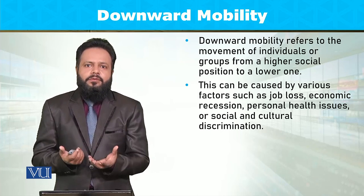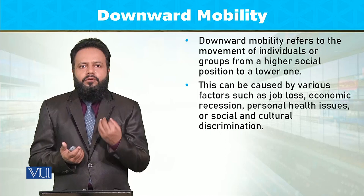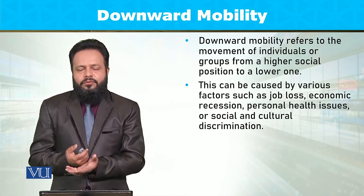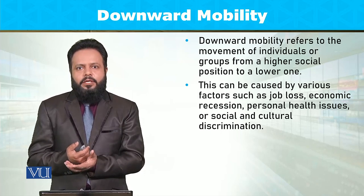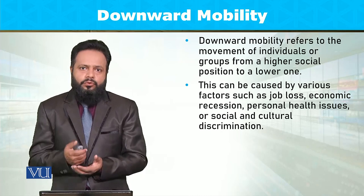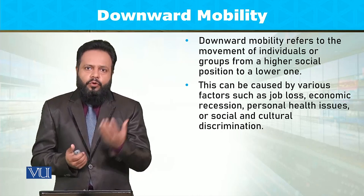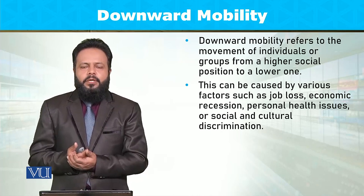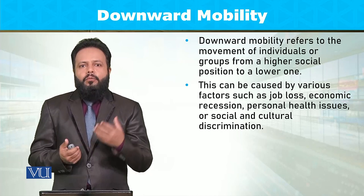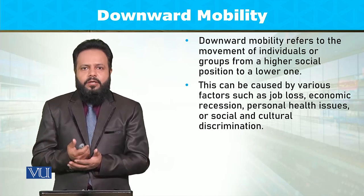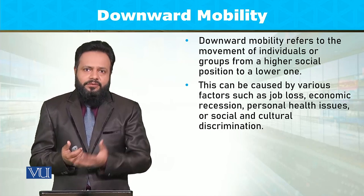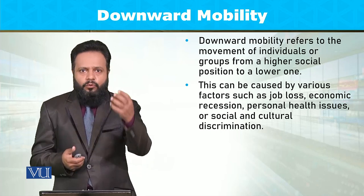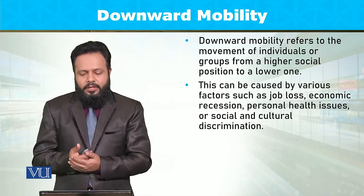بہت سی ایسی social policies ہیں جن کی وجہ سے accidents occur ہوتے ہیں۔ مثال کے طور پر road safety کو دیکھیں تو poor road safety کی وجہ سے پاکستان میں ہر سال بہت سے لوگ اپاہج ہو جاتے ہیں، اور اس disability کی وجہ سے بھی ان کی downward social mobility ہوتی ہے۔